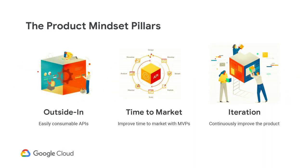To recap, the API product mindset consists of three key focus areas. First, focus on the user experience — think outside-in and get a good understanding of the user's needs in order to create a positive experience. Second, make it easy to consume with documentation and sample code. Time to market is key — every enterprise company is jumping on board to enable digital assets, and the first to market will have a leg up on their competitors. Third, iterate — don't try to boil the ocean, but design for extensibility. Design for the basic value proposition, get feedback, and continue to iterate to improve the product.